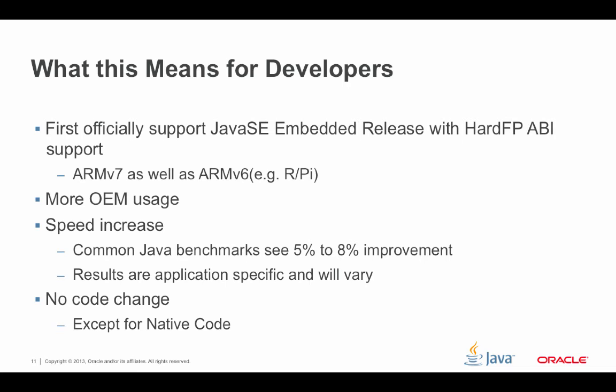Remember, that 5–8% improvement is actually less than what native apps will get. The reason is that within a Java application, we're already doing floating point to floating point conversions, so a native app doesn't have that advantage — it goes to the registers and then has to transfer to the floating point unit. Results are application-specific and will vary based on how much code you're doing in floating point. The big key is that you don't have to do any code change, with one exception: if you're passing code to native code, you may have to make changes and conditionally compile to support both soft FP and hard FP environments.